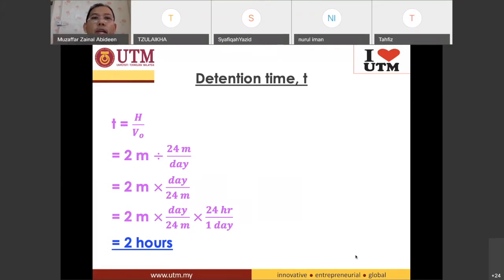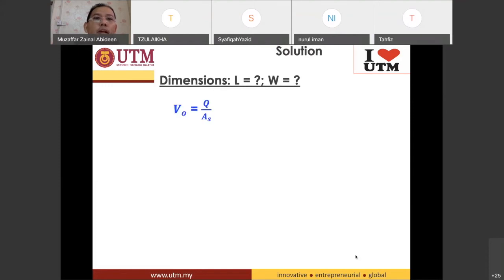So we know that V0 is equal to Q divided by AS. The Q was given. The Q was 20 MLD and AS is equal to Q divided by V0, 24 meter per day.